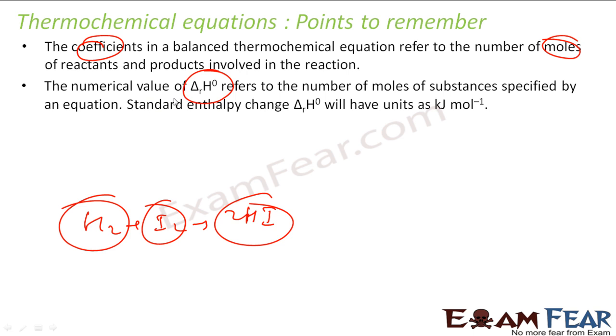The numerical value of delta H for a reaction depends on the number of moles specified by the equation. For example, when I have 2H2 plus O2 gives 2H2O, delta H equals minus 572 kilojoules. This is for 2 moles of hydrogen, for that particular equation.